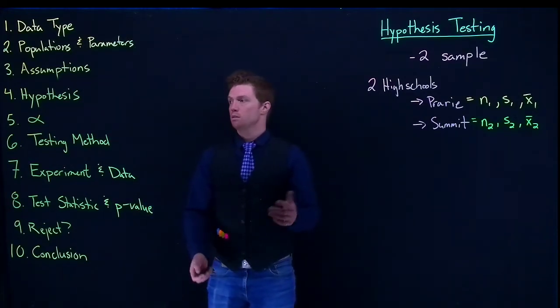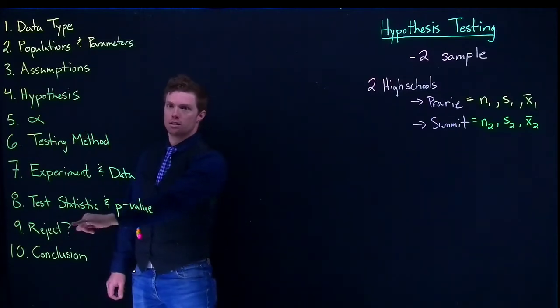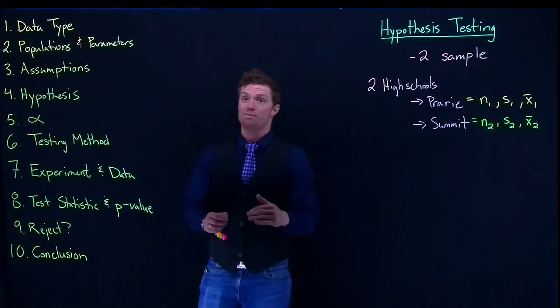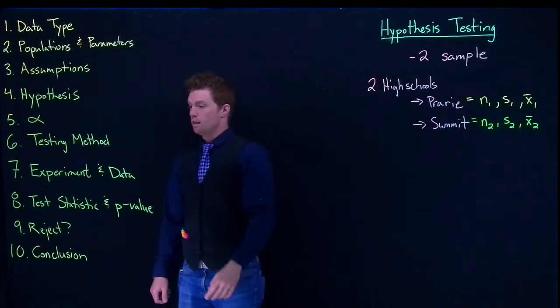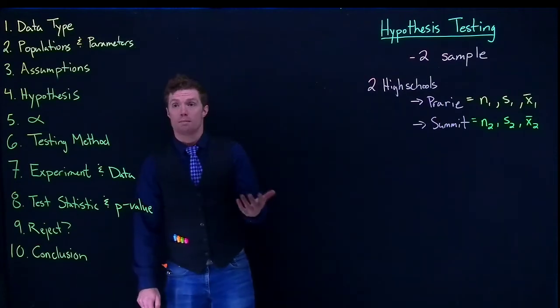And if they're too extreme, if this p-value is less than alpha, we get to reject the null hypothesis. So it's still the same thing about rejecting. So let's go and look at our test statistics and what we might be seeing.